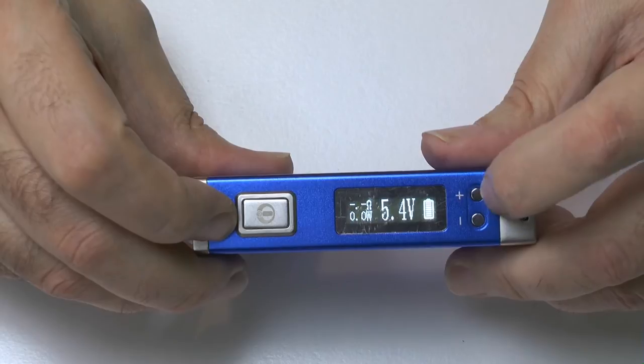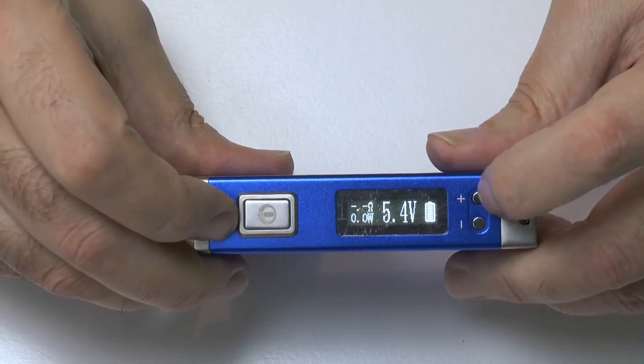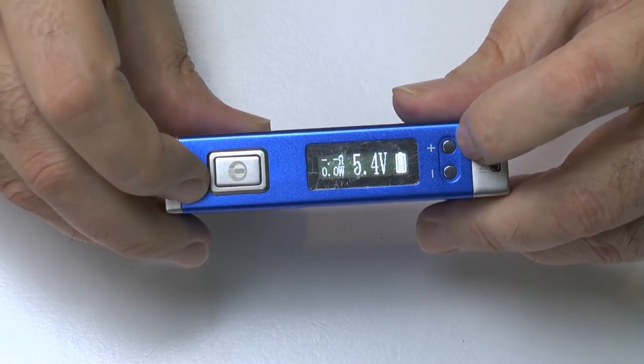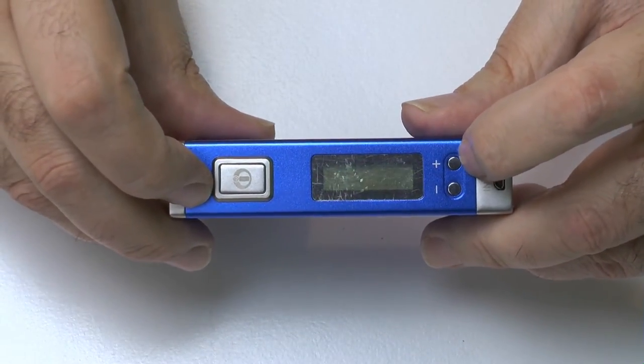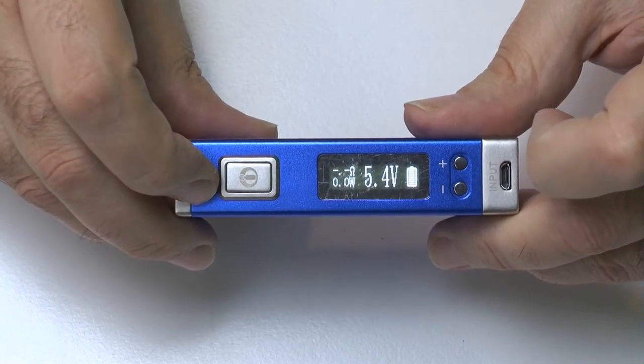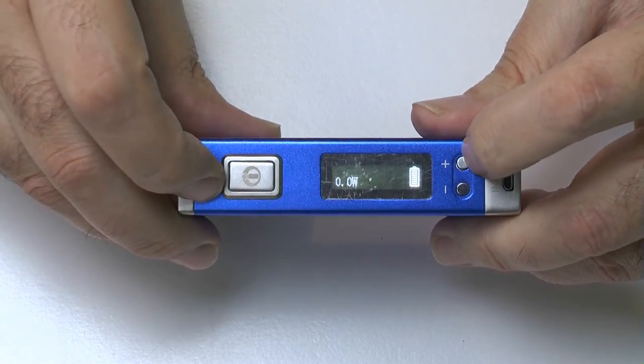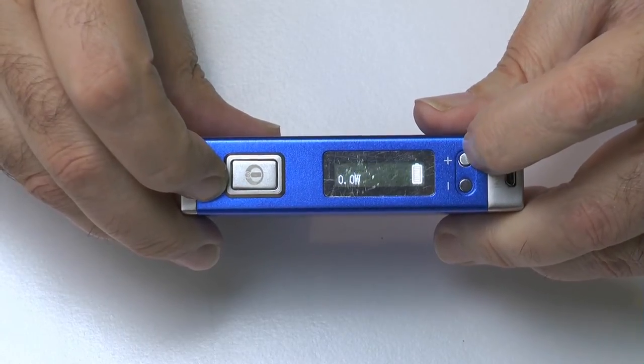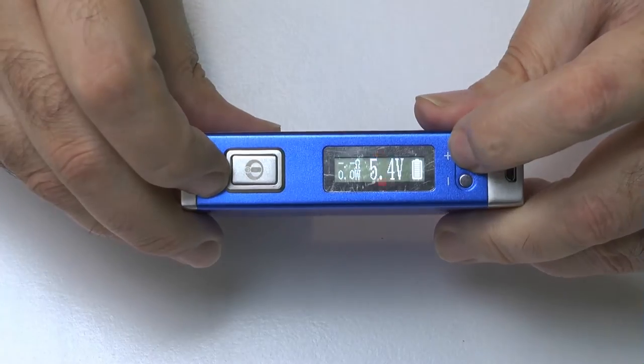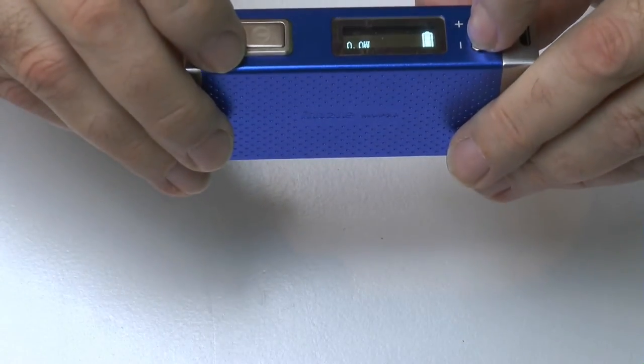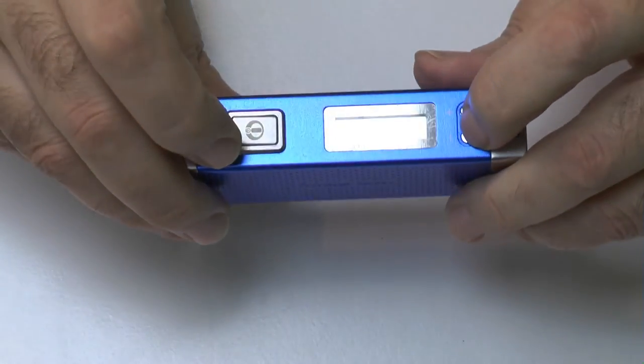You will also see that if you depress the plus or the minus buttons nothing happens. Why I hear you ask? Well it's got auto lock, so if you hold down the plus or the minus for a couple of seconds the display will start to flash and then you can change your voltage or your wattage to your heart's content simply by pressing your buttons.